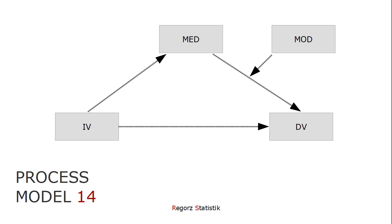Many process templates come in pairs. In the case of this moderated B path, you have process model 14 with a moderated B path, and you have process model 15 where the B path and the C prime path are both moderated. Both model templates are quite popular — you find thousands of journal articles using this approach. Process model 14 is a little bit more popular, with more articles on Google Scholar than process model 15.